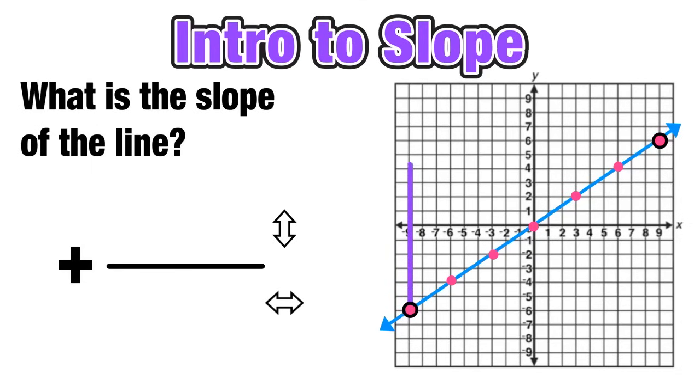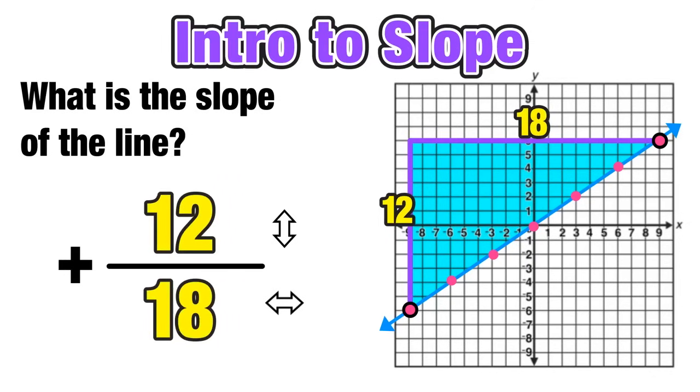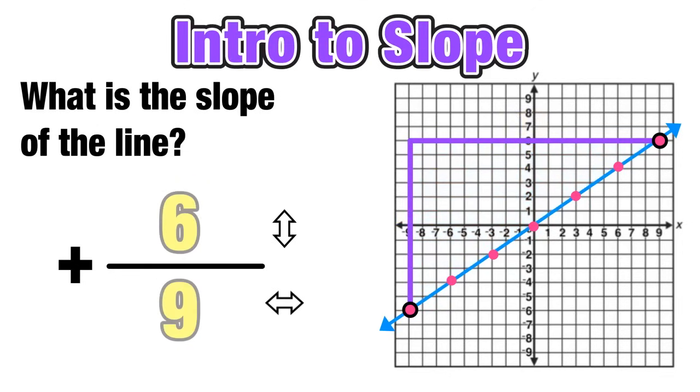So we'll start by counting the rise, the number of units that we are increasing, and then the run, the amount of units that we're moving horizontally, again to make this staircase shape. If we count the number of units upward, we rose 12 and then our run was 18 units to the right, so we can express our slope as positive 12 over 18. However, 12 over 18 can be simplified. We divide those both by 2, we get 6 over 9.